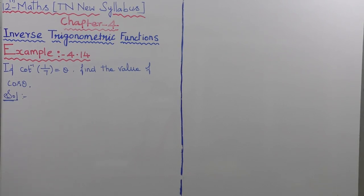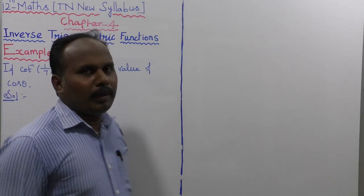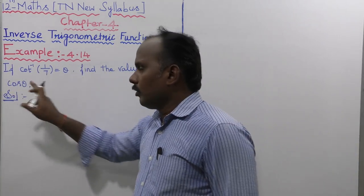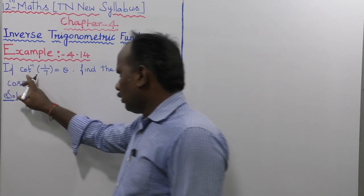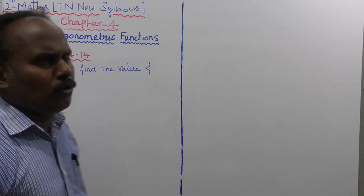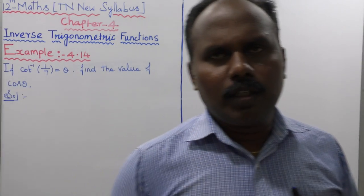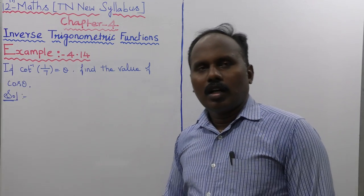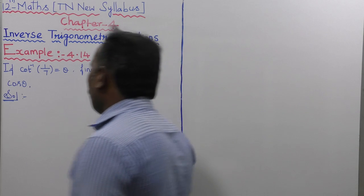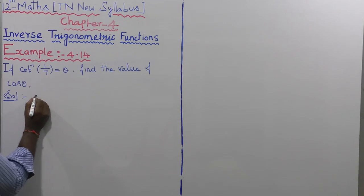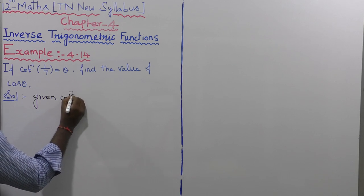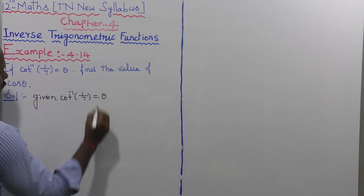Example 4.14: If cot inverse of 1 by 7 is equal to theta, find the value of cos theta. The given value is cot inverse of 1 by 7 is equal to theta.